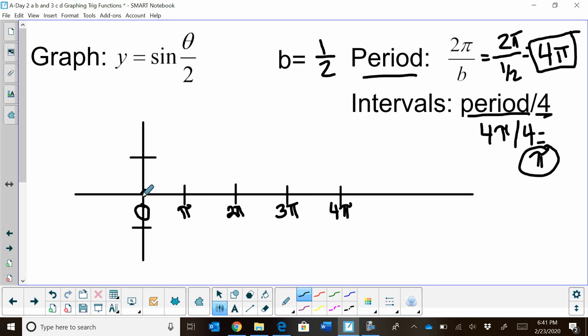Sine starts at the origin at 0, 0. At the first quarter point, I'm going to be at positive 1. At the second quarter point, we hit the x-axis. At the third quarter point, I'm at negative 1. And at the fourth quarter point, I'm back to the x-axis. So I'm going to graph my sine curve.